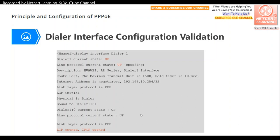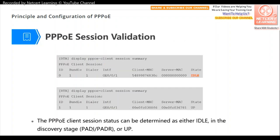After configuration, use the command 'display interface dialer 1' to validate. We can see the dialer 1 current state is up and the line protocol state is also up. At the end of the output, 'LCP open, IPCP open' confirms that both LCP and IPCP negotiation have completed successfully. We can also use 'display pppoe-client session summary' to verify the session state — first it shows idle, then after a few seconds it shows up.